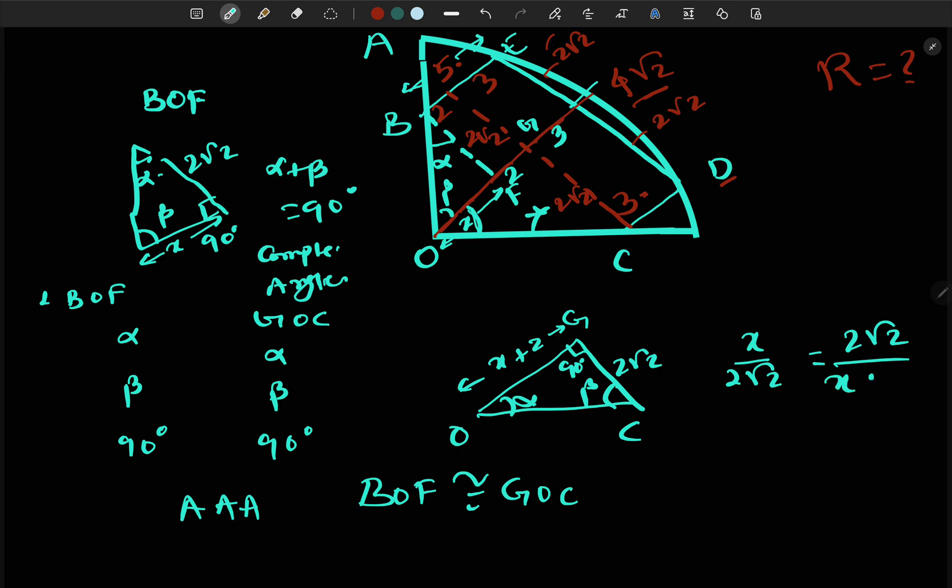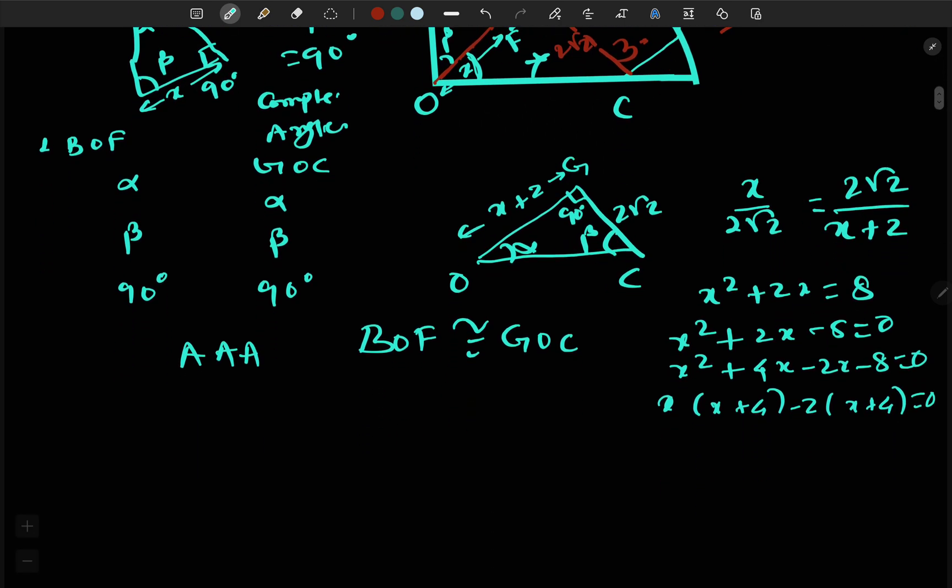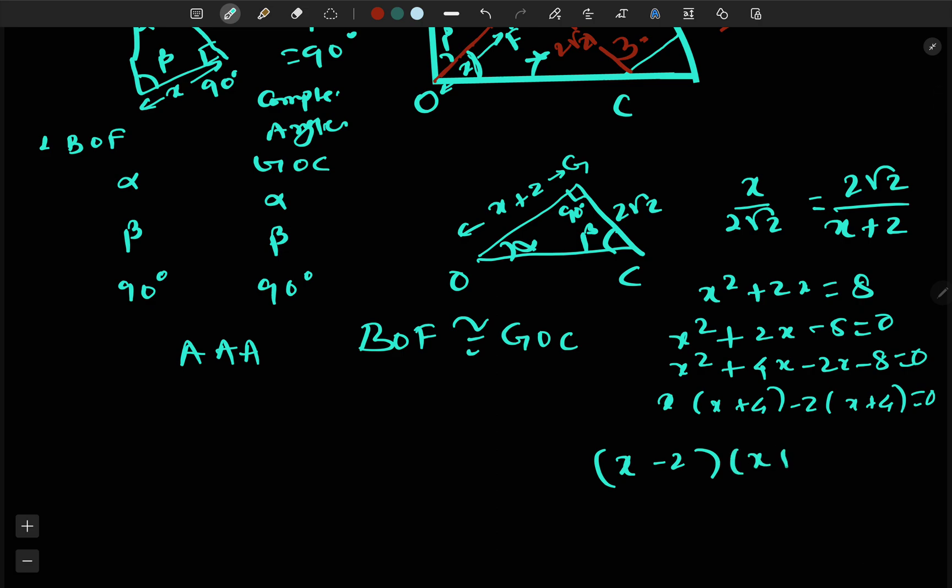Now we will solve this: x over 2√2 equals 2√2 over x plus 2. Cross multiply to get x² + 2x equals 8, so x² + 2x - 8 equals 0. We can factor this: (x+4)(x-2) equals 0, which gives x - 2 = 0 or x + 4 = 0. As x is a side of a triangle, x cannot be negative, so x has to be 2.